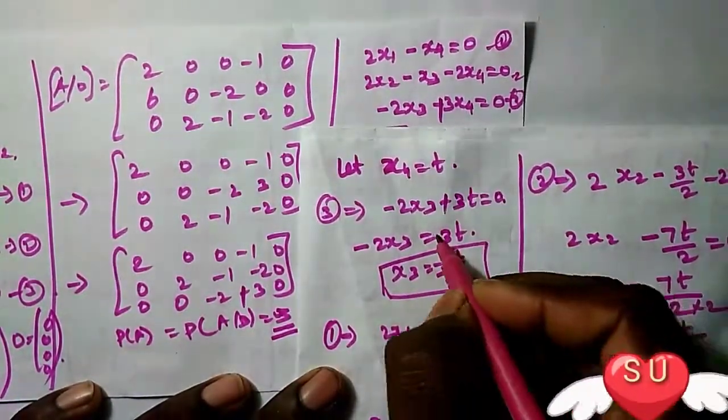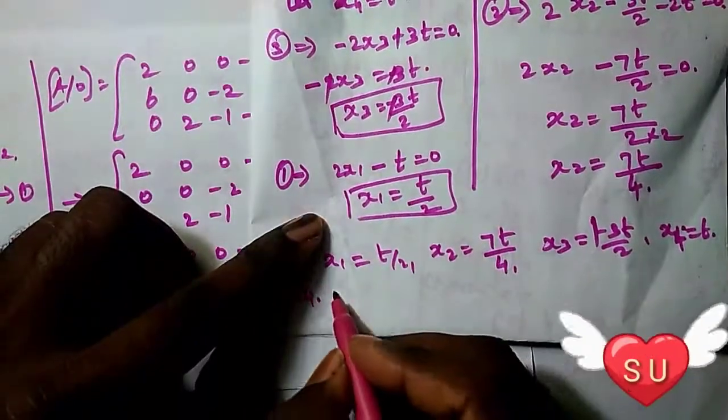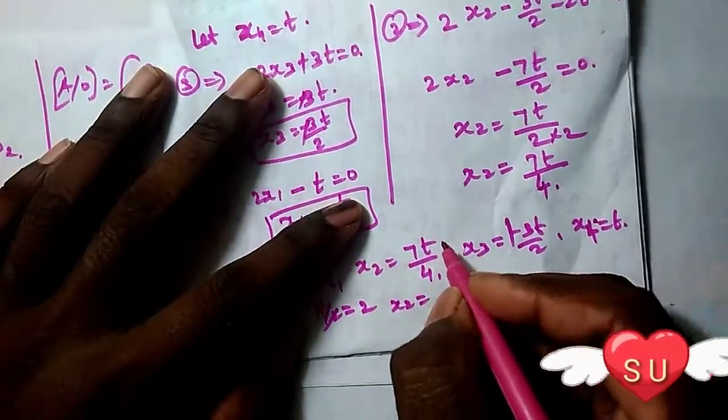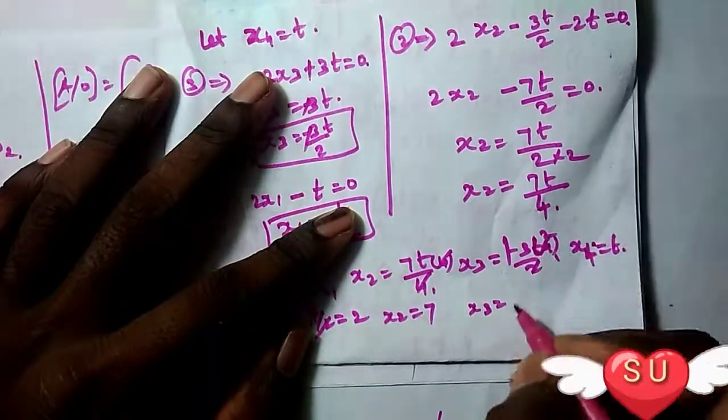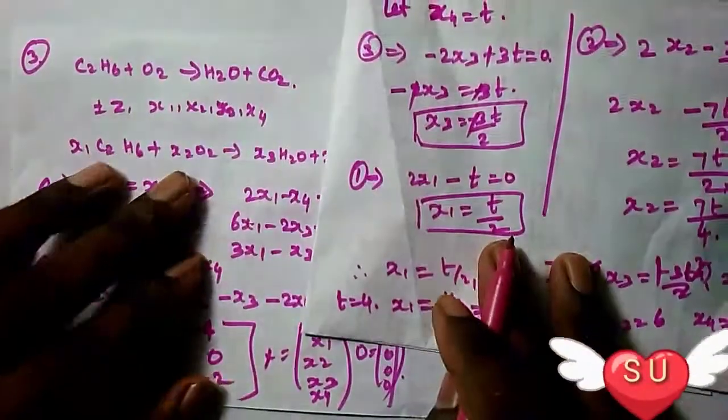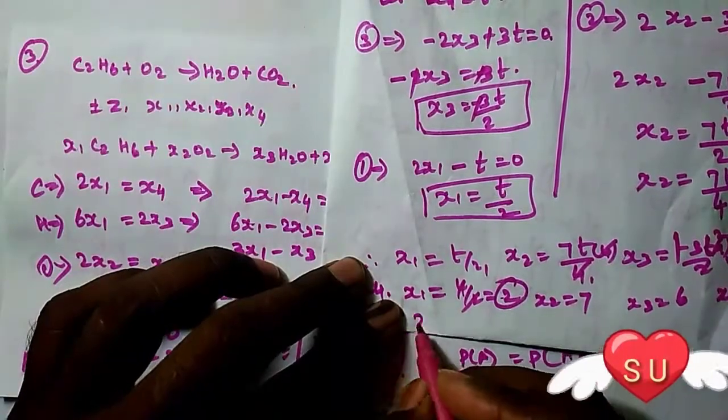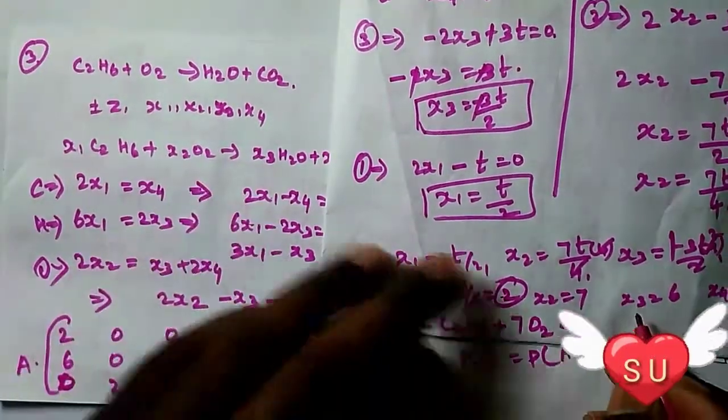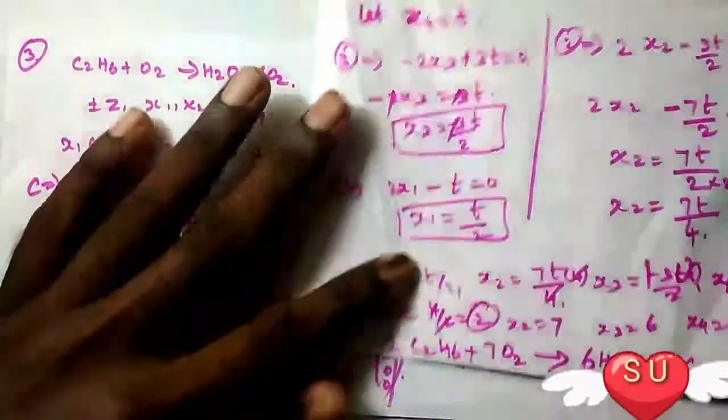To get integer values, set t = 4. Then x1 = 4/2 = 2, x2 = 7(4)/4 = 7, x3 = -3(4)/2 = -6 (take as 6), x4 = 4. The balanced equation is: 2 C2H6 + 7 O2 → 6 H2O + 4 CO2.